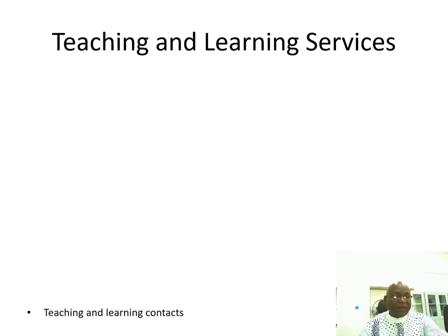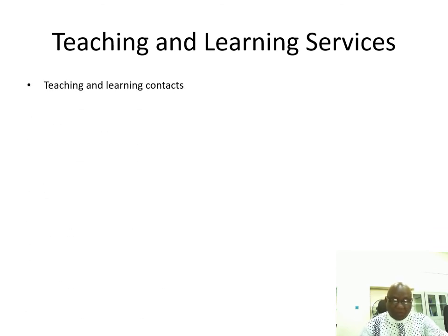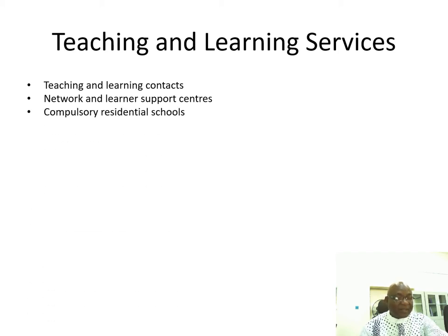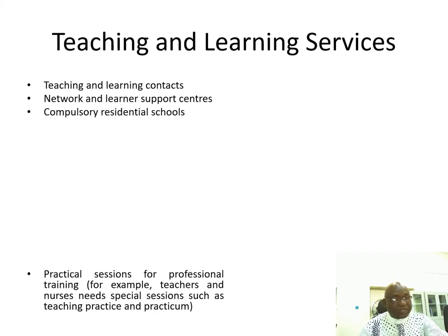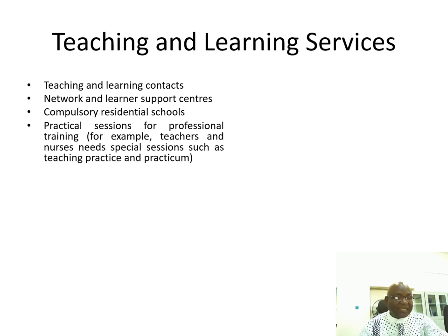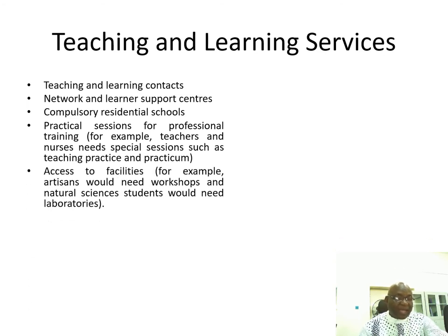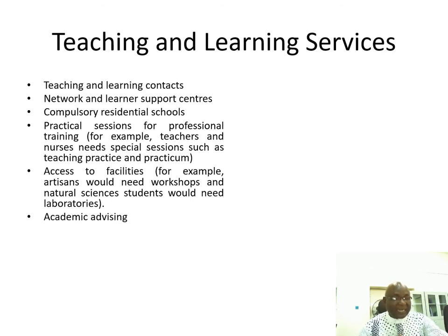Now let us take a look at the teaching and learning services. These include: 1. Teaching and learning contacts. 2. Network and learner support centers. 3. Compulsory residential schools. 4. Practical sessions for professional training — for example, teachers go through teaching practice and nurses go through practicals. Also included is access to facilities; for example, art students will need workshops and natural sciences students will need laboratories. All this has to be provided under the teaching and learning services.